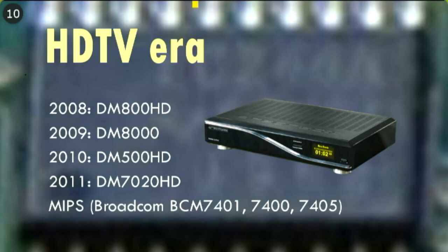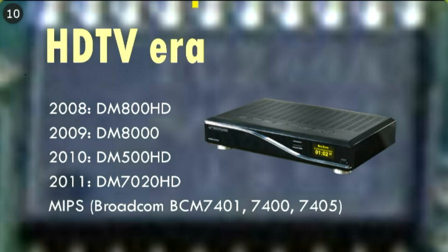All the boxes up to that point were standard definition — the receiver side is digital video broadcasting, but the output was analog and standard definition. In 2008 we brought out the first high definition box, the DM800, which was largely a byproduct of developing the DM8000, highly anticipated by our enthusiasts — especially the DX community, the guys trying to receive stations from as far away as possible, connecting giant rotor dishes. The DM8000 had two onboard DVB-S2 tuners and another two slots for different C, T, or S tuners.